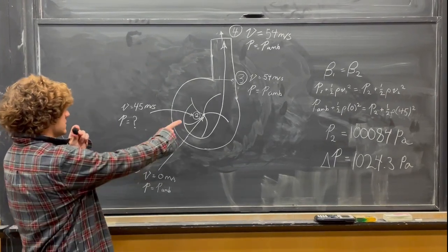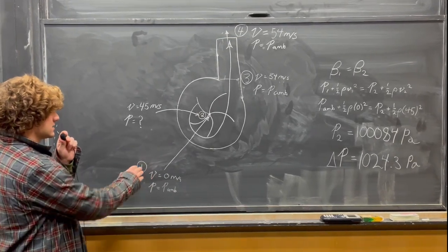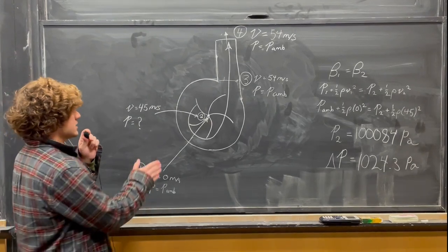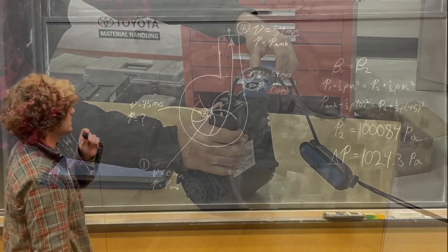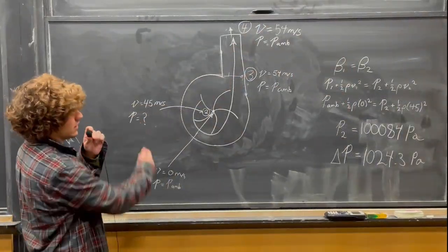At each position, at state one we have velocity zero because it's far away, and the pressure is ambient. As we enter through the eye of the impeller, we measure with the anemometer 45 meters per second fluid flow, but we don't know the pressure here.